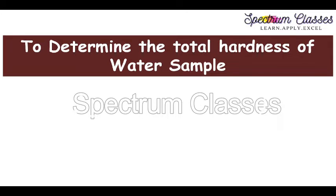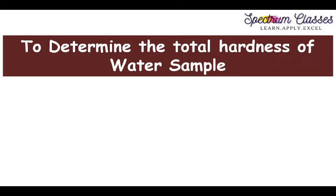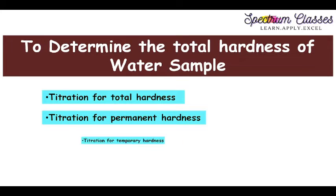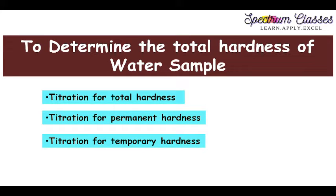Hello everyone, welcome back to Spectrum Classes. In this video I am going to show you the lab activity related to the determination of total hardness of a water sample. In this titration we are going to determine the total hardness and permanent hardness of a given water sample, and we are also going to calculate the temporary hardness. I will show you the lab activity first and then we will do the calculation part.